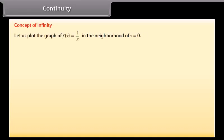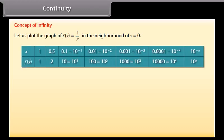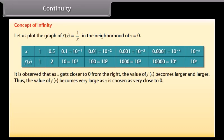Concept of infinity: Let us plot the graph of f(x) = 1/x in the neighborhood of x = 0. For x = 1, f(x) = 1. For x = 0.5, f(x) = 2. For x = 0.1, f(x) = 10. For x = 0.01, f(x) = 100. And so on. It is observed that as x gets closer to 0 from the right, the value of f(x) becomes larger and larger. Thus, the value of f(x) becomes very large as x is chosen very close to 0.